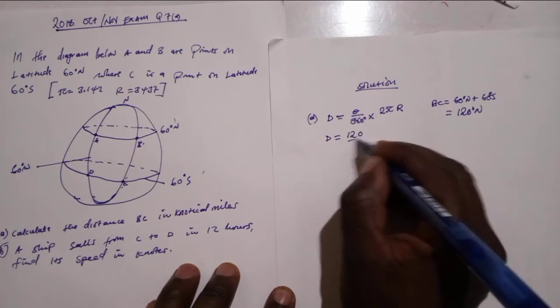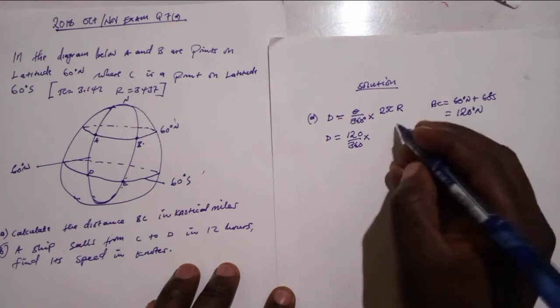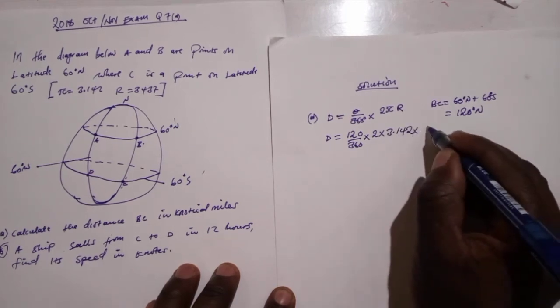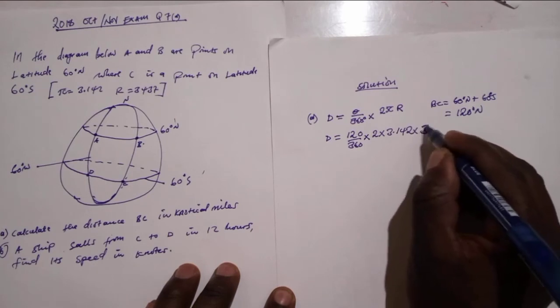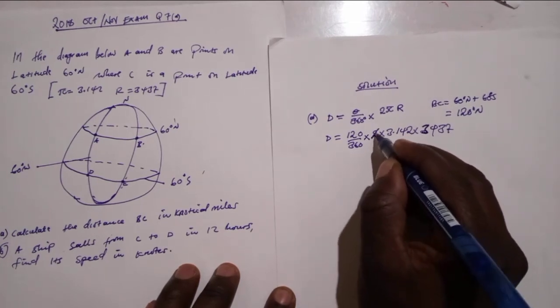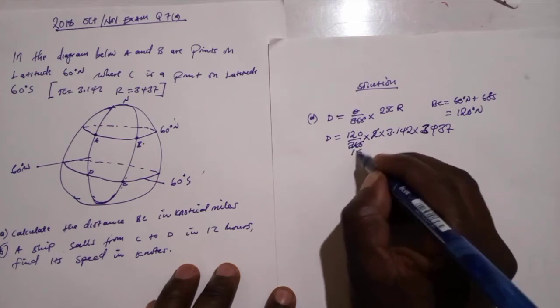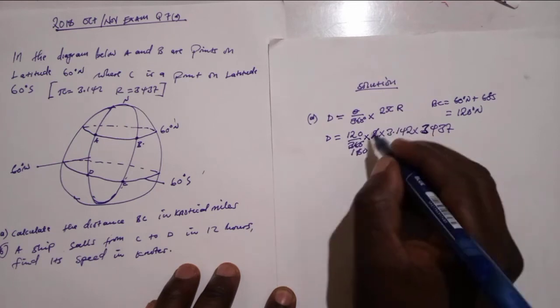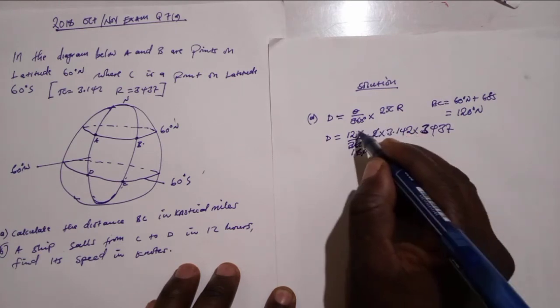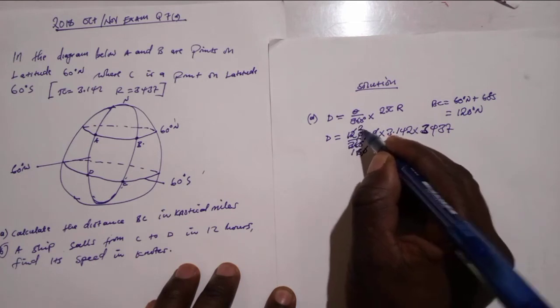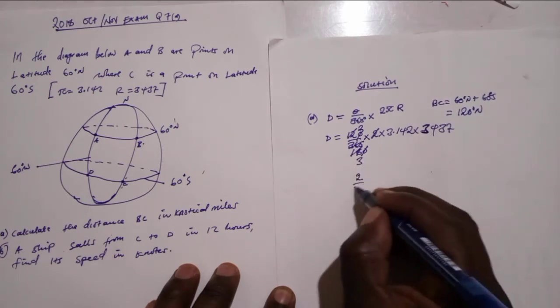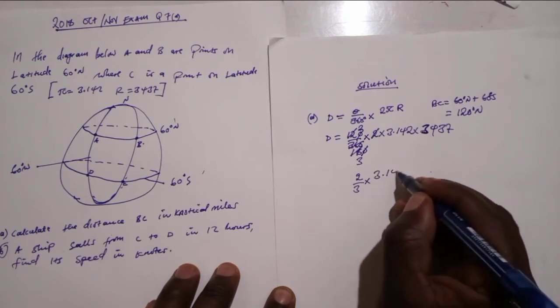Now let's substitute. We have found our theta. It is 120 over 360 multiplied by 2 multiplied by 3.142 multiplied by 3437. Here, 2 into 360 which is 180. Then we remain with 12 over 18. 6 into 12 which is 2, 6 into 18 which is 3.